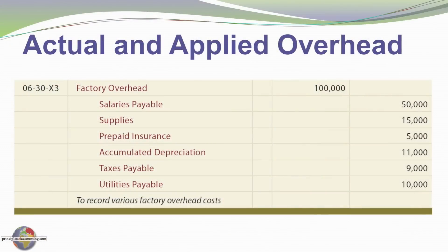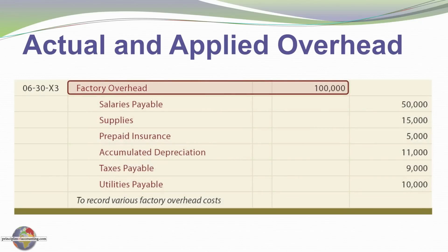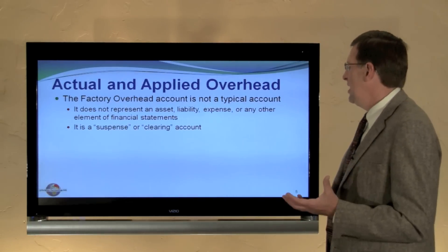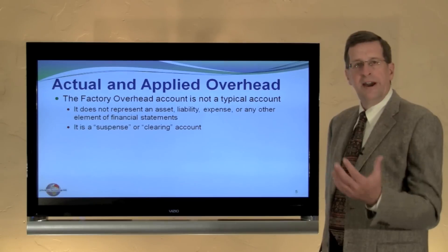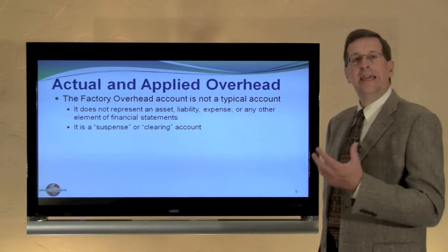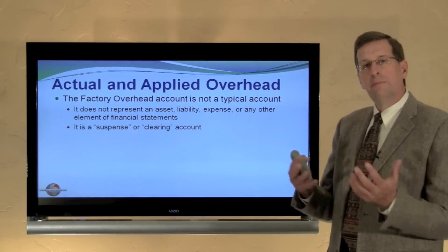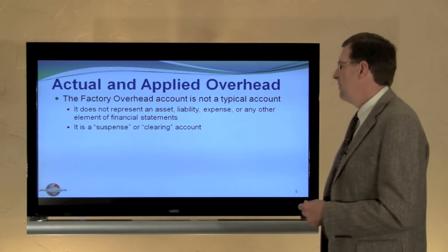Here's the journal entry to record the overhead. There are credits to our payables, our supplies, our accumulated depreciation — all of our manufacturing overhead costs — with the offsetting debit going to factory overhead. The factory overhead account is unique; it's not a typical account. It's not an element of financial statements — you won't find it in a balance sheet or income statement. It's a suspense account, a temporary clearing account. We put amounts into the factory overhead account and take them out.